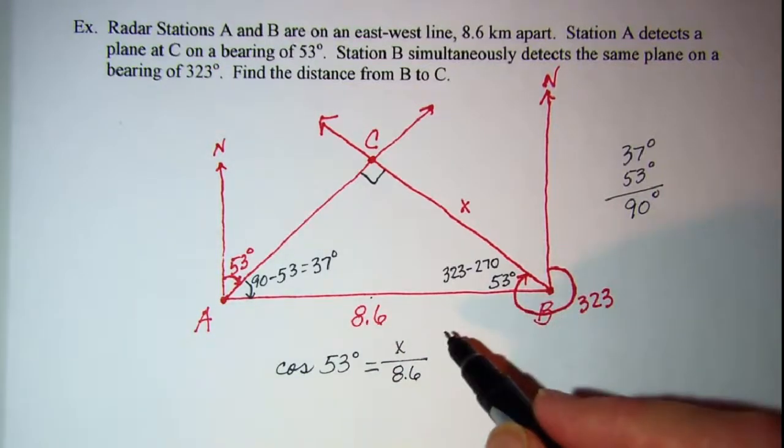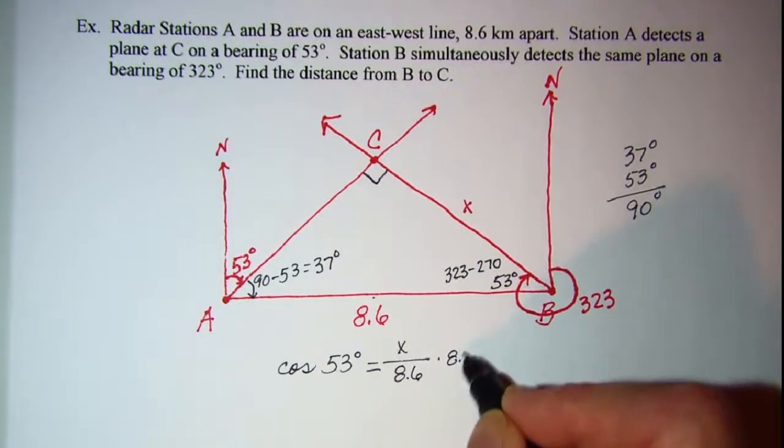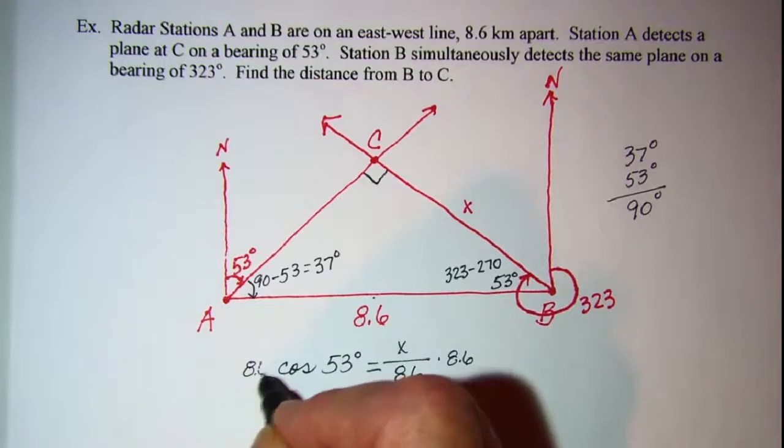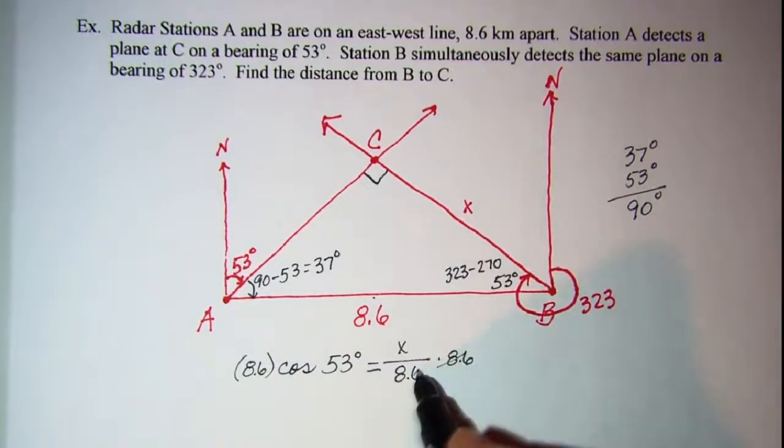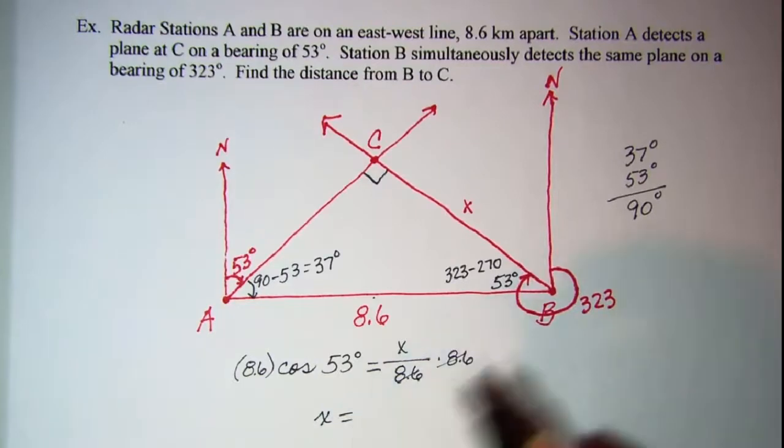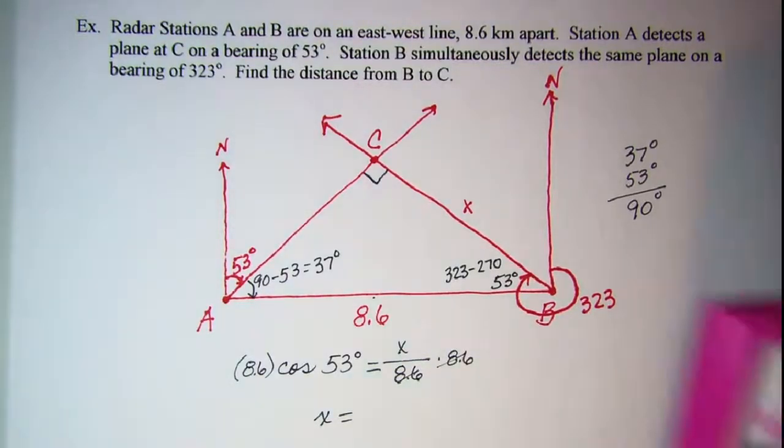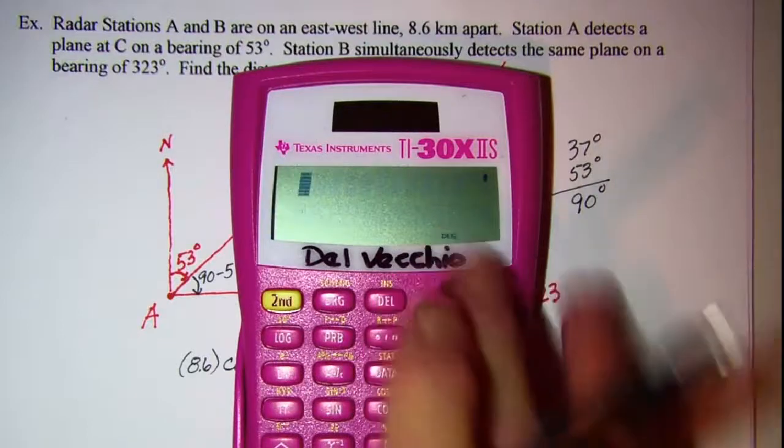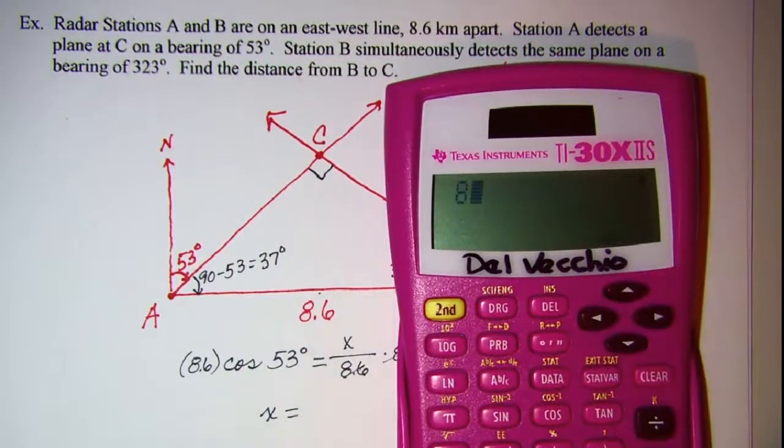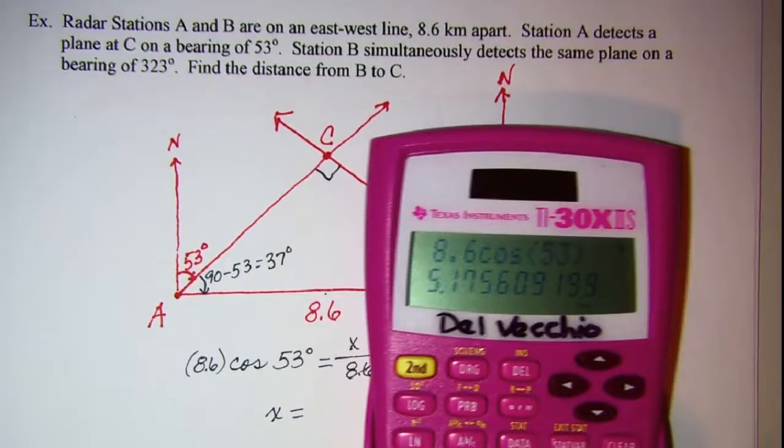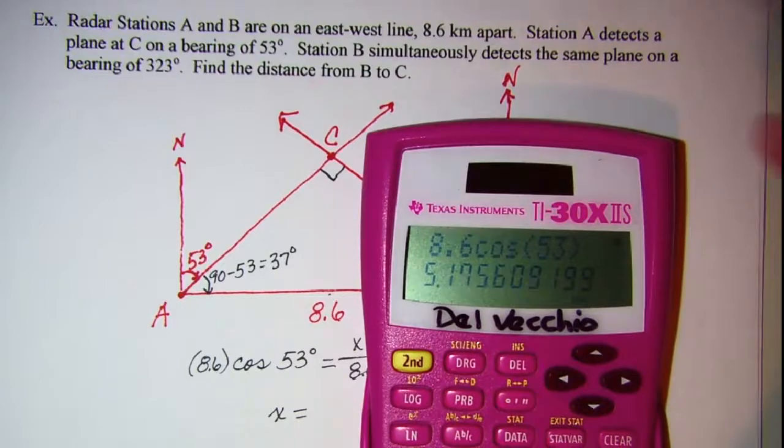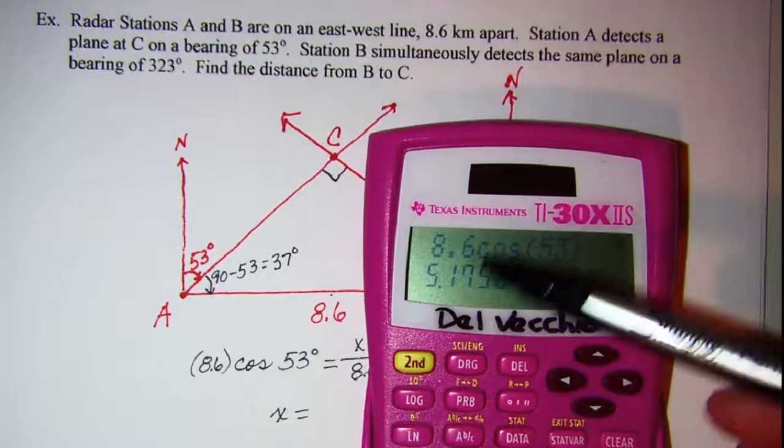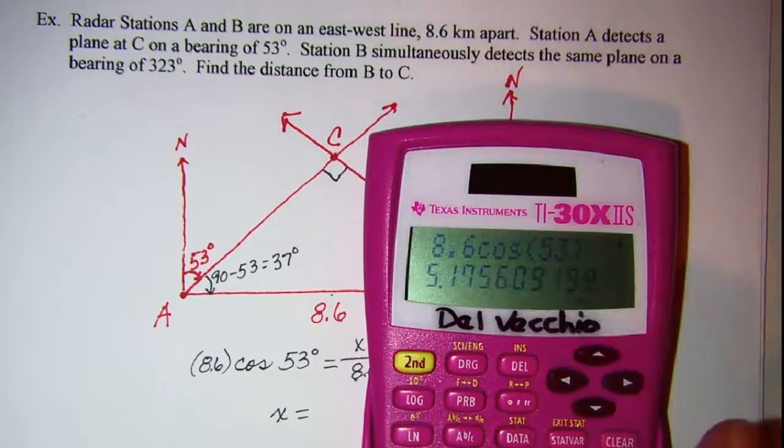Now to get X by itself, I need to multiply both sides by 8.6. So X is equal to, make sure that you're in degrees, 8.6 times the cosine of 53. Now I have two significant digits, so I want to write this as 5.2 kilometers.